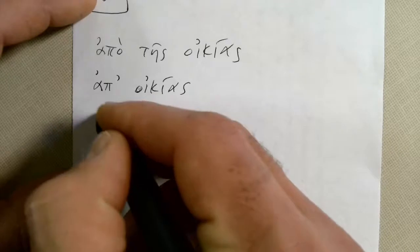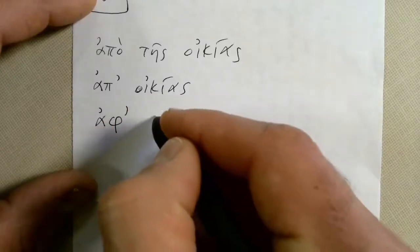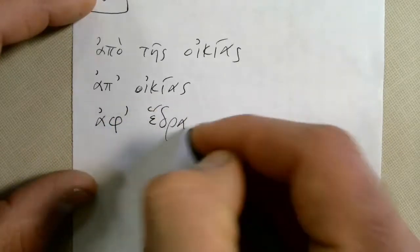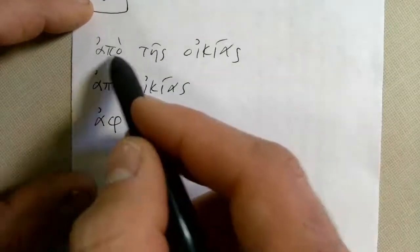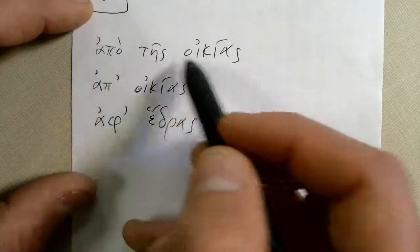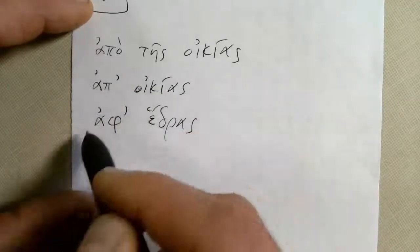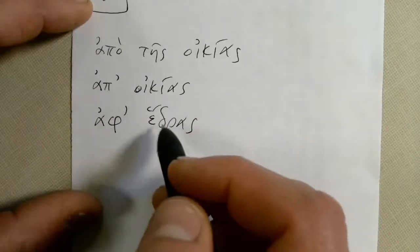Here is another one. Af edras. Afedras, away from a seat. So we have Apotis ikiyas away from the house, Apikyas away from a house, and then Afedras away from a seat.